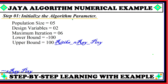This algorithm is also simpler than the teaching-learning-based optimization algorithm. For this numerical example, we are using a population size of 5, which is the total number of candidates in the search space. We have 2 design variables, a maximum number of iterations of 6, a lower bound of -100, and an upper bound of 100.